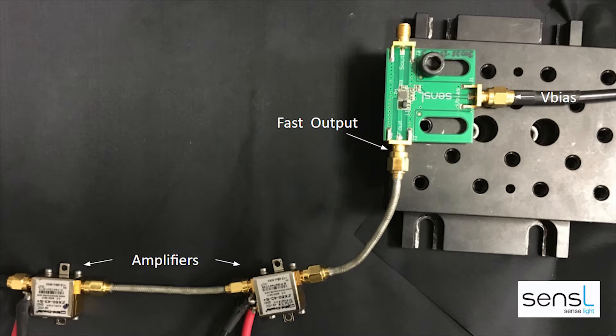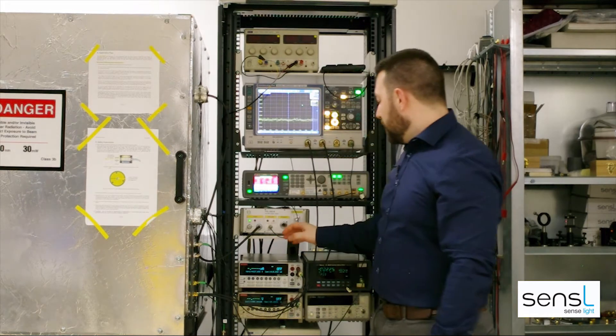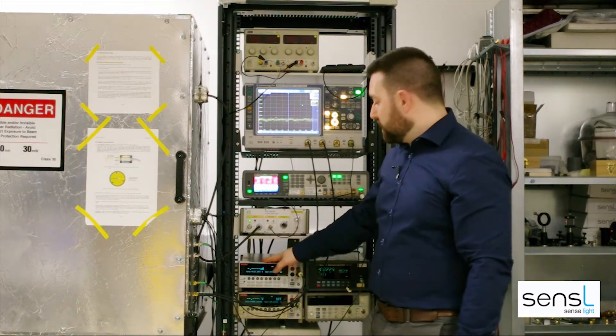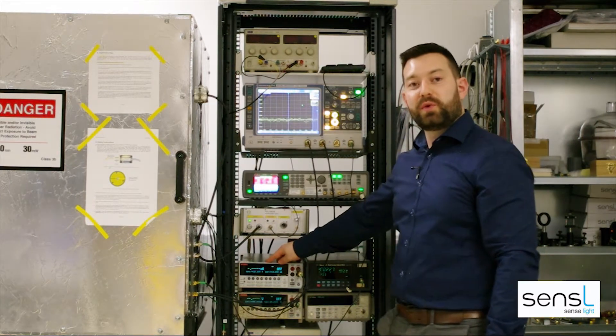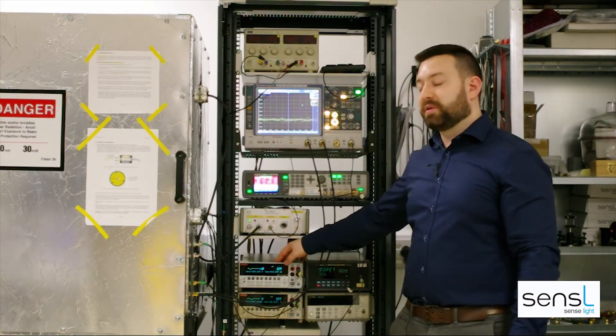The board is kept within a closed dark box so there's no light falling on the SIPM. The SIPM bias supply is powered from a Keithley source meter set to 27 volts and the current is limited to 15 milliamps.